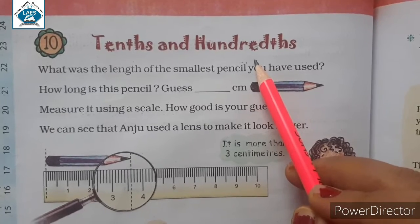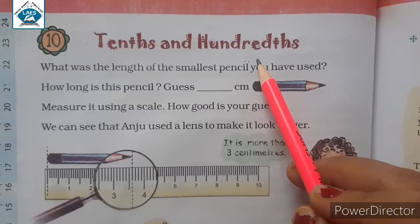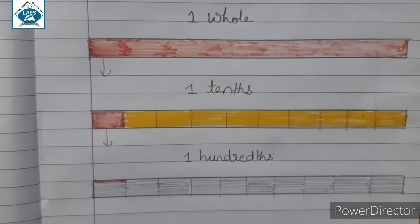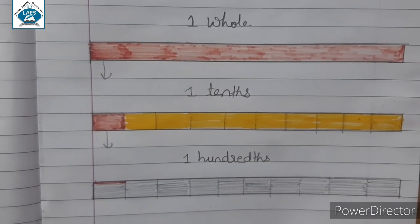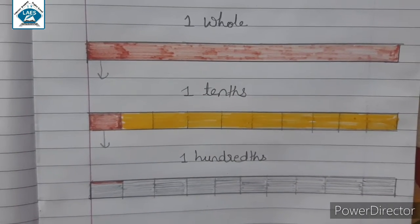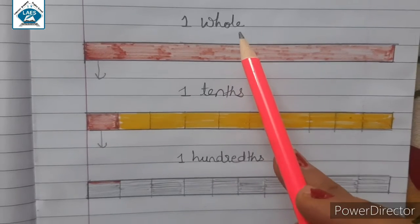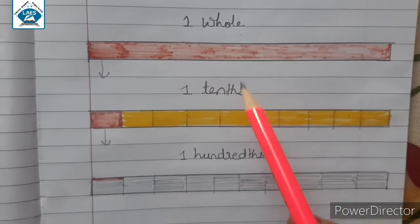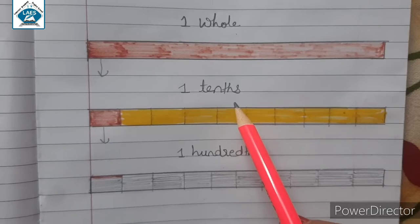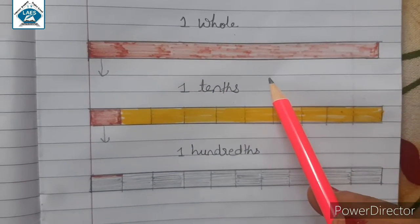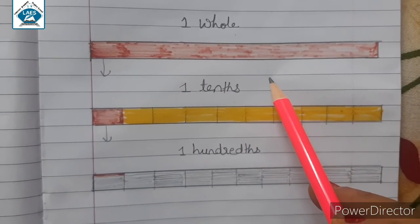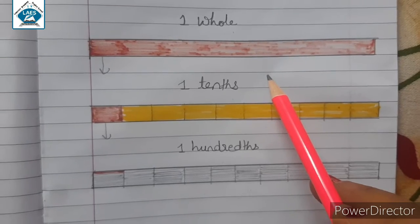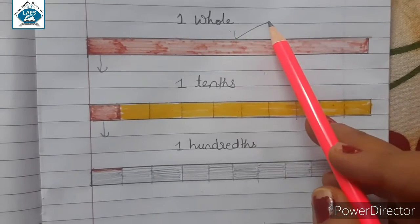For better understanding I have taken a picture. Here you can see the whole picture. On the top it is written 'one whole.' This is a whole rectangular shape and it is completely red, so this one is known as one whole.